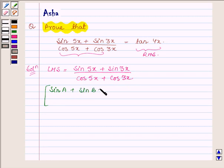First is sin a plus sin b is equal to 2 sin of a plus b upon 2 into cos of a minus b upon 2.